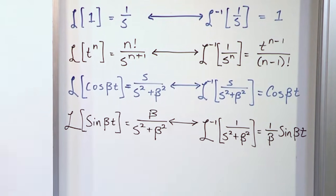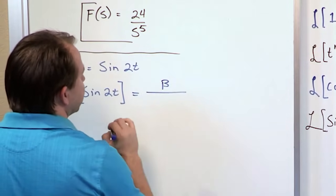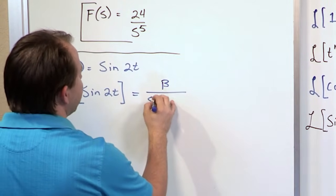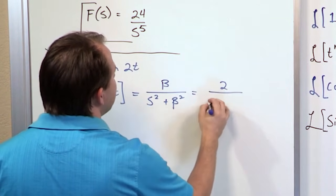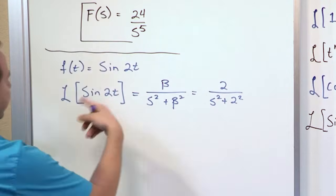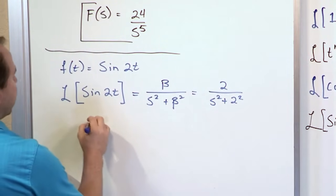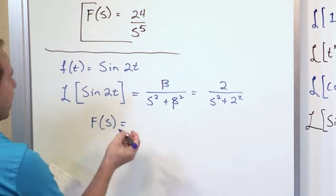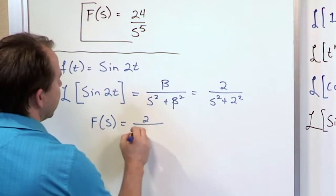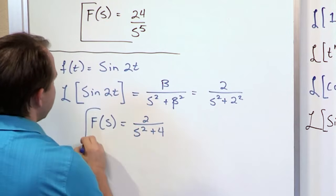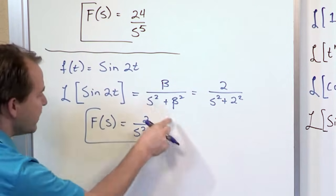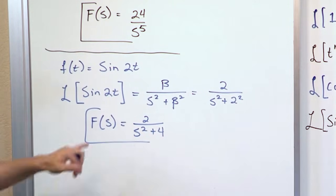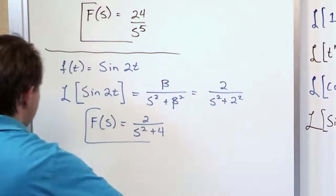Here, beta equals 2. So you can just write beta over s squared plus beta squared, where beta equals 2. So it's going to be 2 over s squared plus 2 squared. And so write the full answer. You can say f is a function of s, which implies that you've already transformed it. It's 2 over s squared plus 4. And that's what you would circle again on your exam. So notice you have a function of s. There's nothing else here except s's. We've locked down this value of beta when I was given this specific problem at hand.